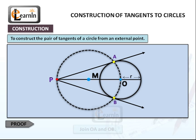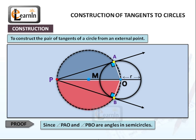Proof: Join OA and OB. Since angle PAO and angle PBO are angles in semicircles, they both form right angles. Angle PAO equals angle PBO equals 90 degrees.